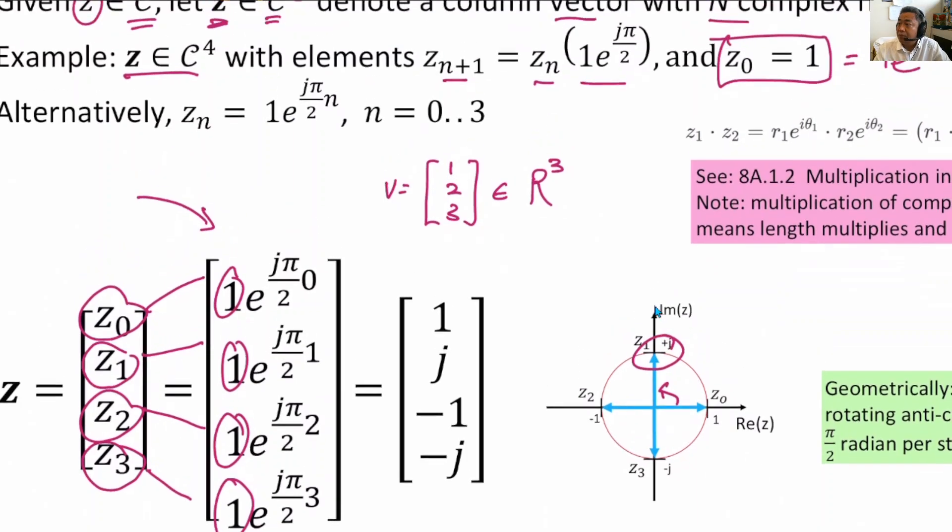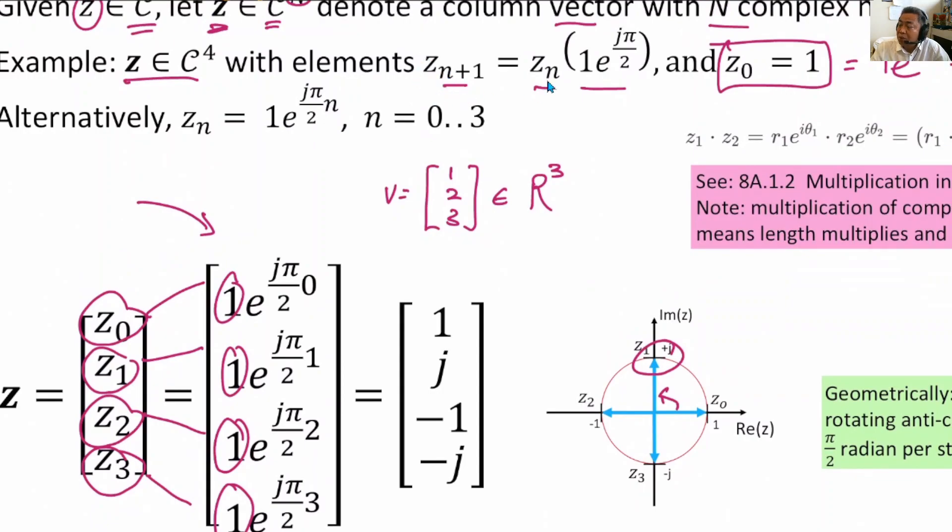What about the third number? You plug in the equation again: z2 equals z1 times 1 e^{j π/2}. Let's work it out together. z2 equals z1, which is 1 e^{j π/2}, and then multiply by 1 e^{j π/2} again. When we multiply in complex exponential, it's really easy. The modulus multiplied by the modulus is 1. And the angle plus angle: π/2 plus π/2 becomes π. So 1 e^{j π} is where? It is here. We move by π anticlockwise. This is actually -1 + j0 in rectangular form.